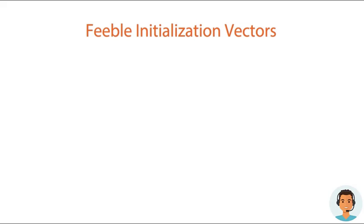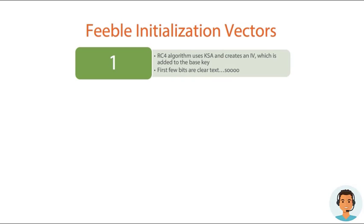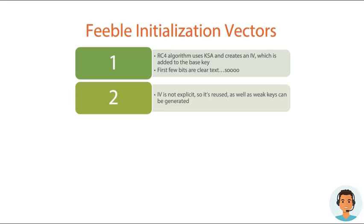Some of the weak initialization vectors in WEP: first, the fact that it uses RC4. Now RC4 itself isn't weak — it's how WEP uses RC4. It utilizes a key scheduling algorithm, or KSA, to create the initialization vector, which is added to the base key. Unfortunately, the first few bits are clear text, so it becomes very easy to predict what the initialization vectors are going to be. Therefore, if I intercept enough traffic with WEP, I'll be able to figure out what your key is.